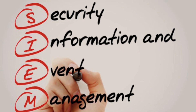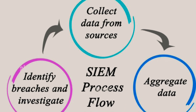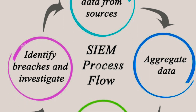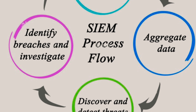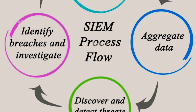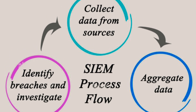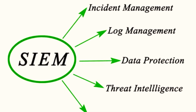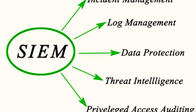How does SIEM work? In a nutshell, it collects log data from various sources within an organization, combines it, and analyzes it for unusual activity. If it detects potential threats, it generates alerts to notify the security team. The team can then investigate and respond appropriately, whether that means ignoring a false alarm or taking action to mitigate a real threat.